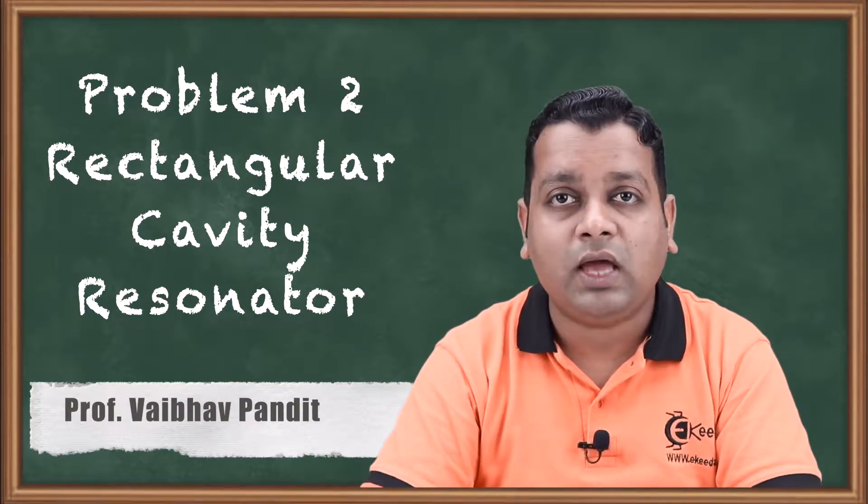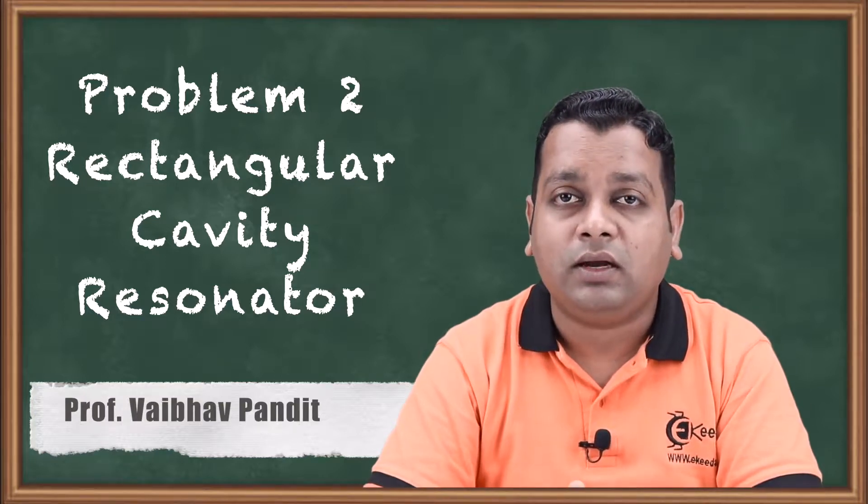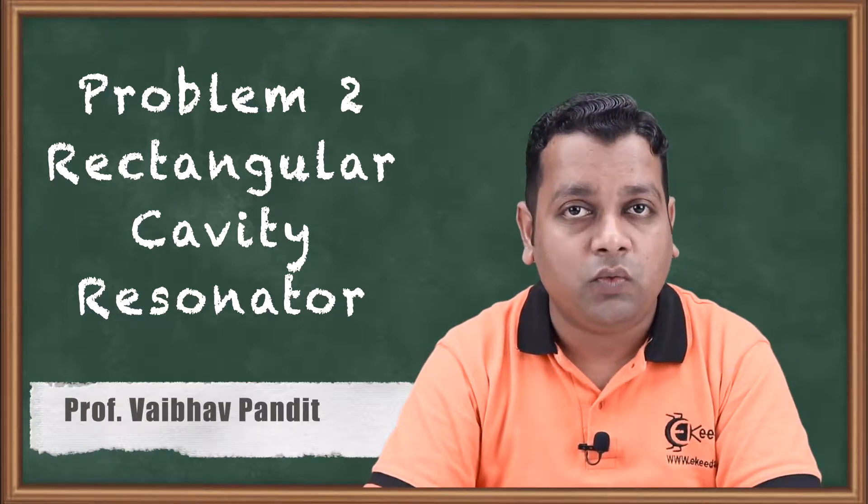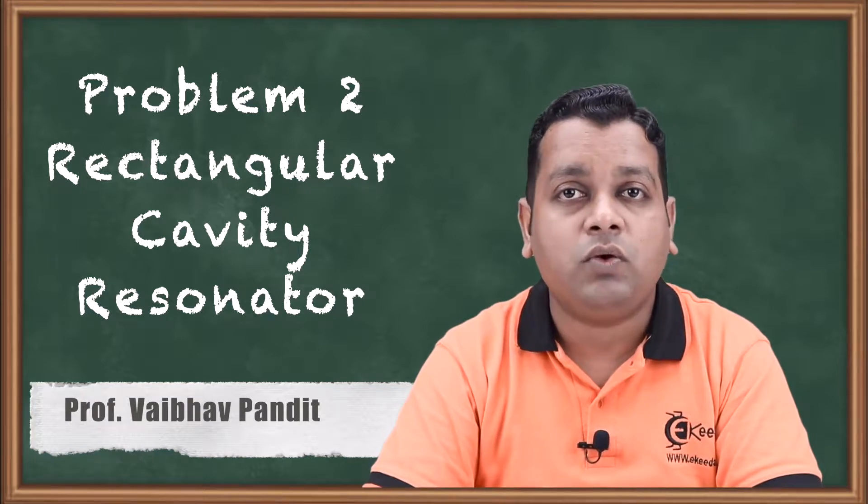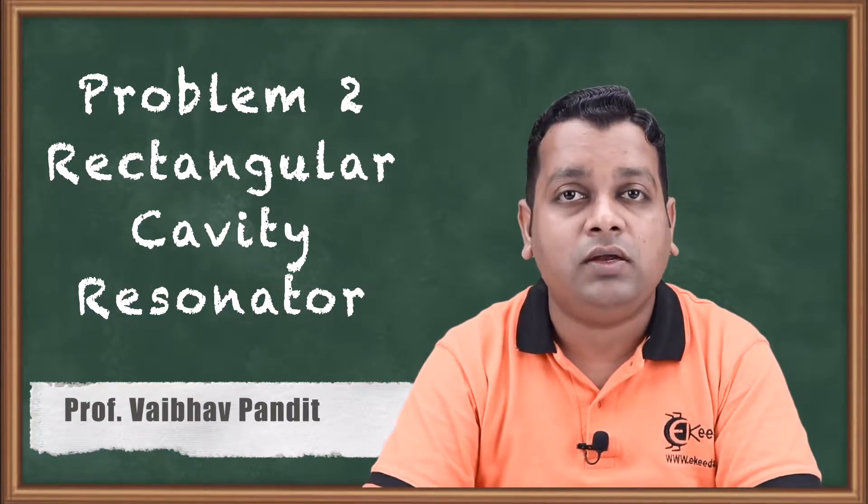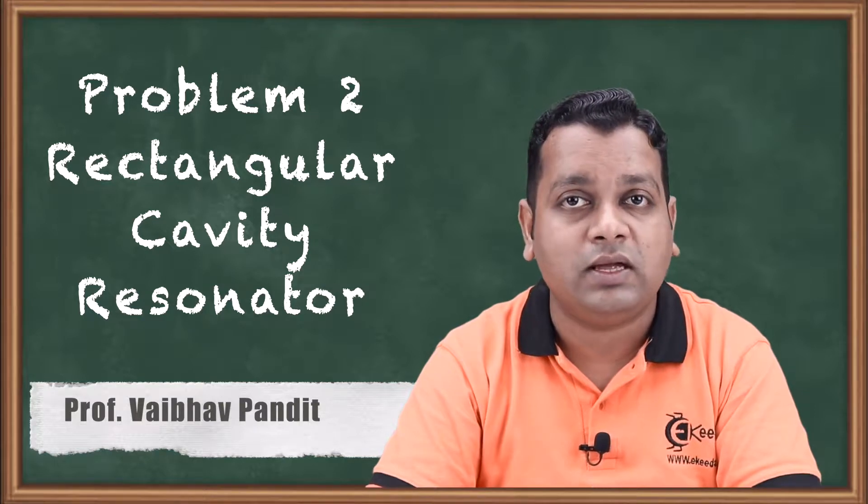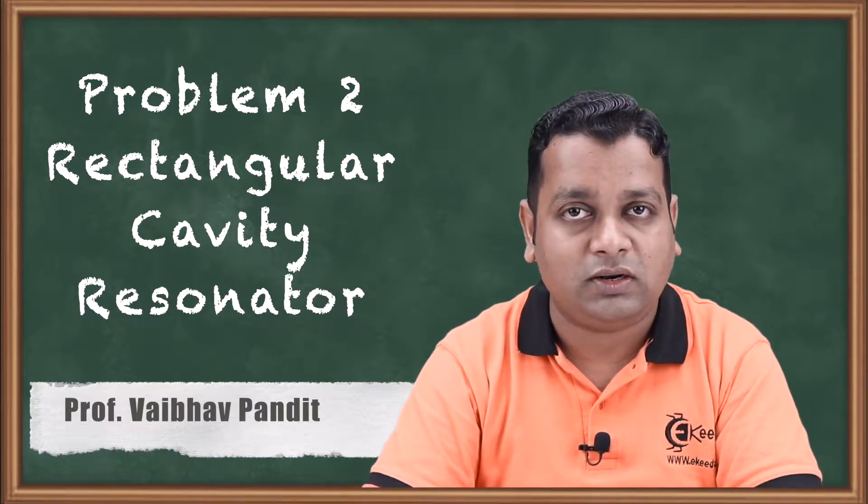For having the cavity resonators, we take understanding from previous chapters on rectangular and circular waveguides. A rectangular waveguide is a hollow metallic tube having rectangular cross section, and when it is closed at both ends with short circuited plates, it becomes a rectangular cavity resonator.